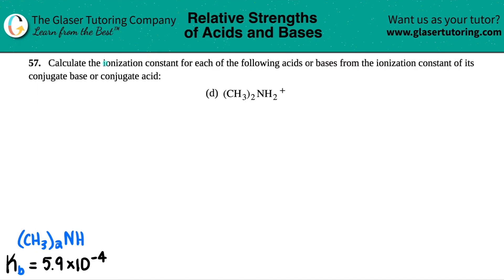Number 57, calculate the ionization constant for each of the following acids or bases from the ionization constant of its conjugate base or conjugate acid. Then we have letter D out of the bunch.